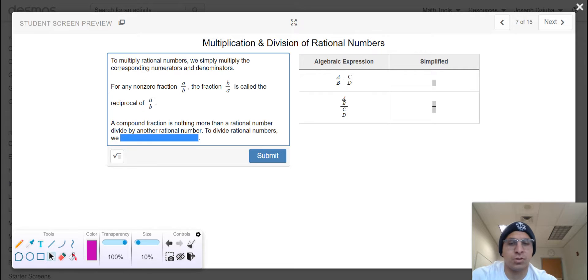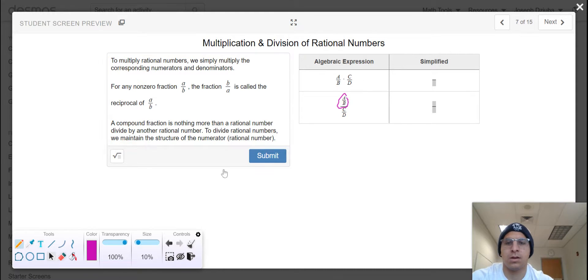So a compound fraction is nothing more than a rational number divided by another rational number. To divide rational numbers, we maintain the structure of the numerator. So there's a fraction, which is a rational number. I'm going to do a little bit of writing at the same time. All right, so we're going to maintain this structure here, a divided by b.